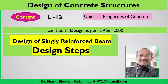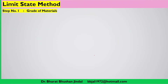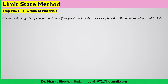Step number one: list out the grade of materials — which grade of concrete and which grade of steel we are going to use in the design of the singly reinforced section. If the grade of concrete or steel is not given in the design problem, you have to assume them accordingly, selecting a suitable grade based on the recommendations of IS 456.